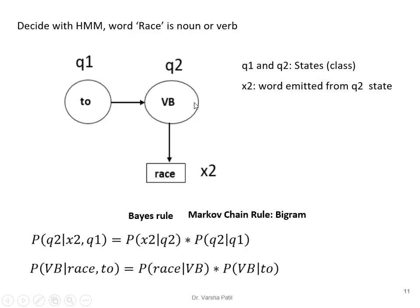Now see how to apply the HMM model. Before the VB tag, the TO tag is coming. Q1 is the TO state and Q2 is the VB state. The word X2 'raise' is emitted from the Q2 state. We want to determine which category 'raise' belongs to. The transition from Q1 to Q2 is the state transition probability, and the emission of X2 from Q2 is the emission probability. The equation is: P(Q2 | X2, Q1) = P(X2 | Q2) · P(Q2 | Q1), using Bayes rule. P(X2|Q2) comes from the emission probability matrix and P(Q2|Q1) from the state transition matrix.